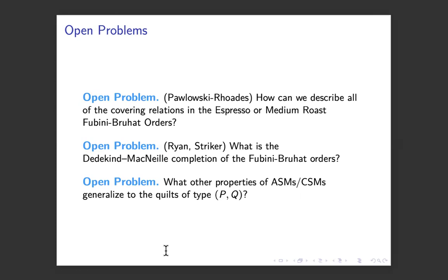And the third problem is what other properties of the alternating sign matrices and their corner sum matrices would generalize to these quilts of type P, Q. And I should have meant to ask on here for you all is what geometry might go with the quilt lattices and with, in particular, the study of all of the rank functions that go with quilts of type BK cross BN. Okay, let me quit there. But thanks for listening.